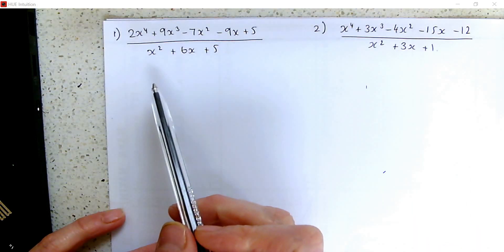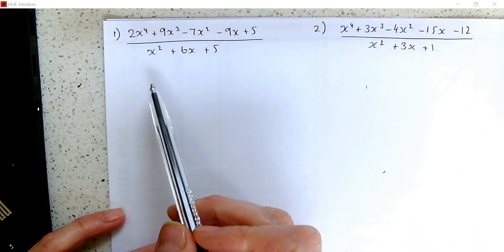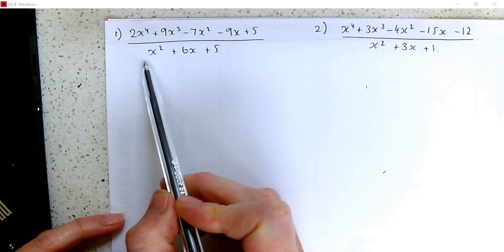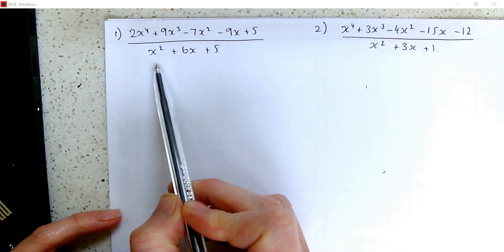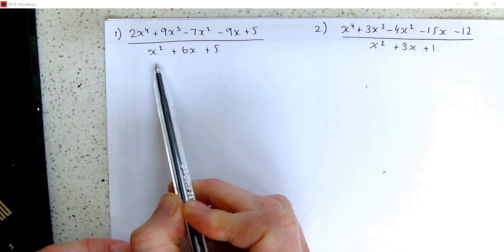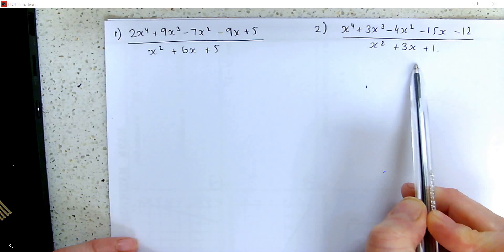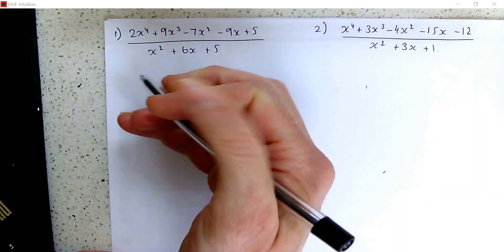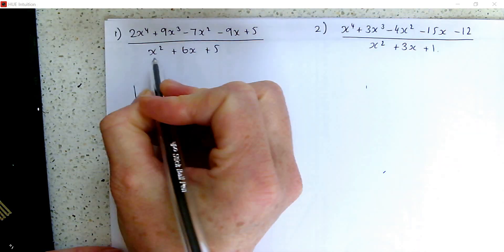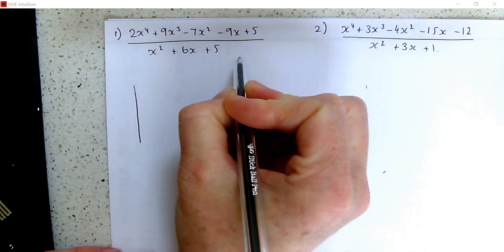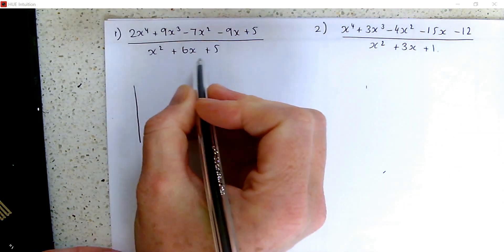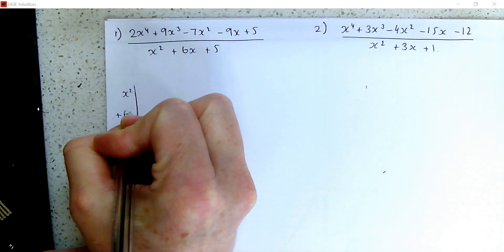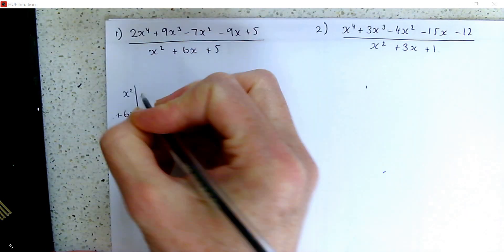I'm going to use the grid method to do algebraic division where the divisor is a quadratic. The first example will have no remainders and the second one will have a remainder. We start off setting up a grid as usual with the divisor down the side, split into the three terms: x squared plus 6x plus 5.